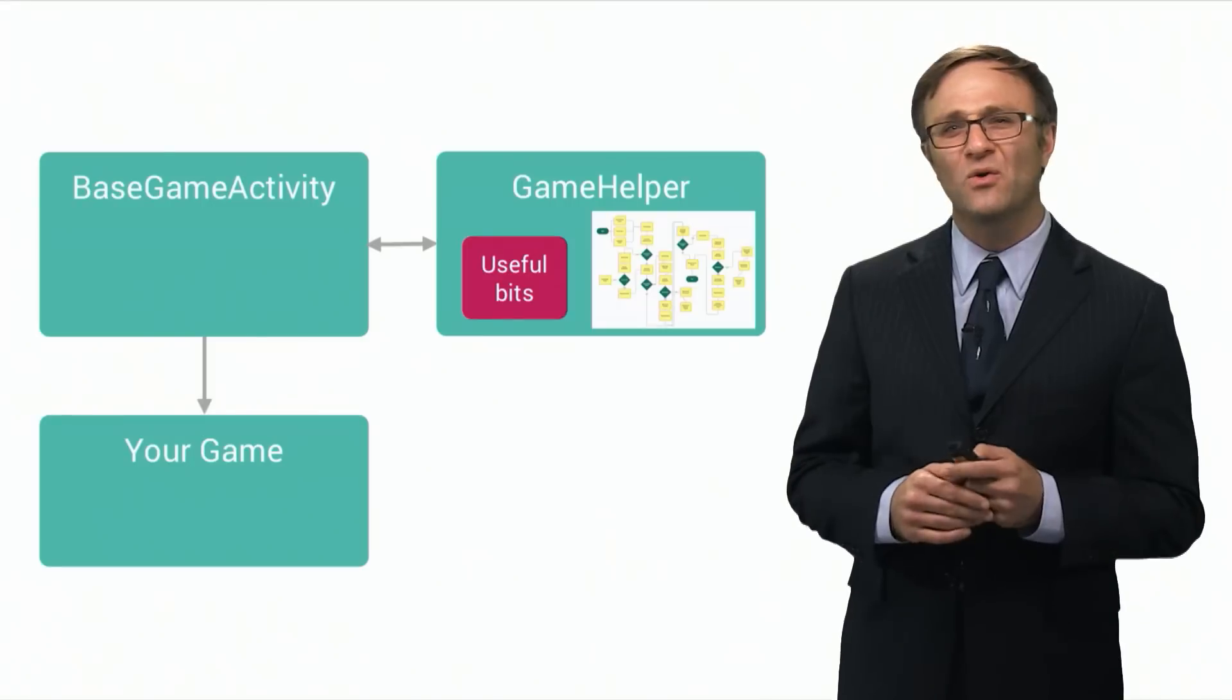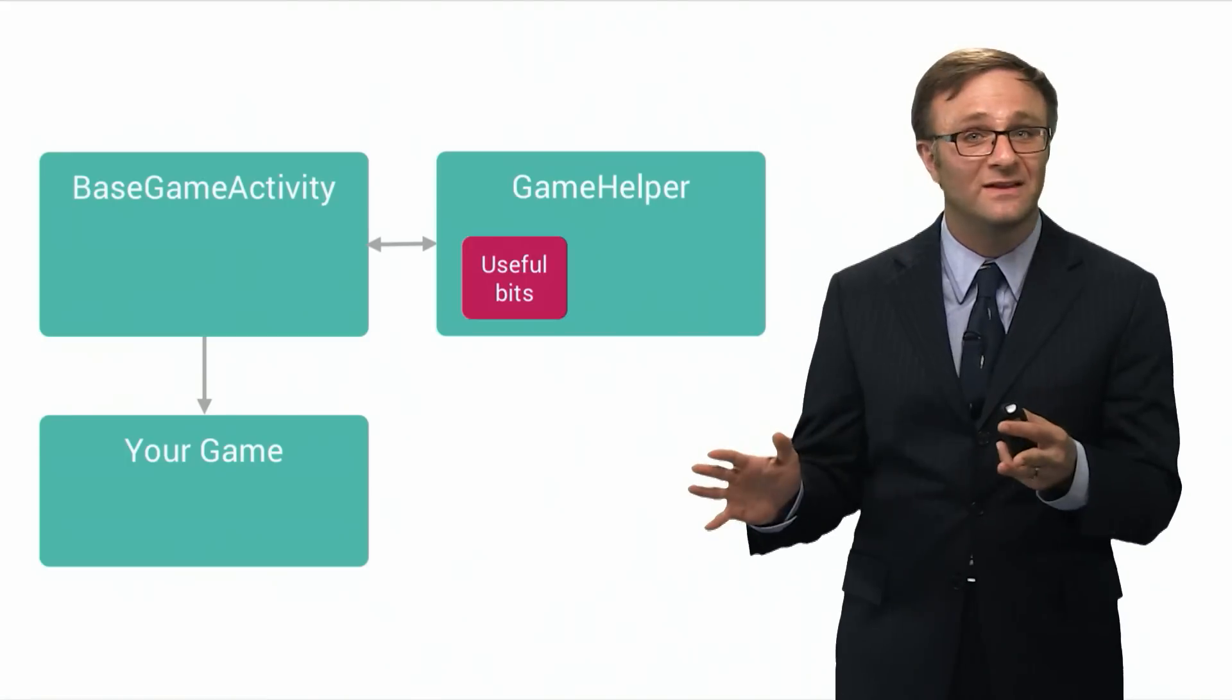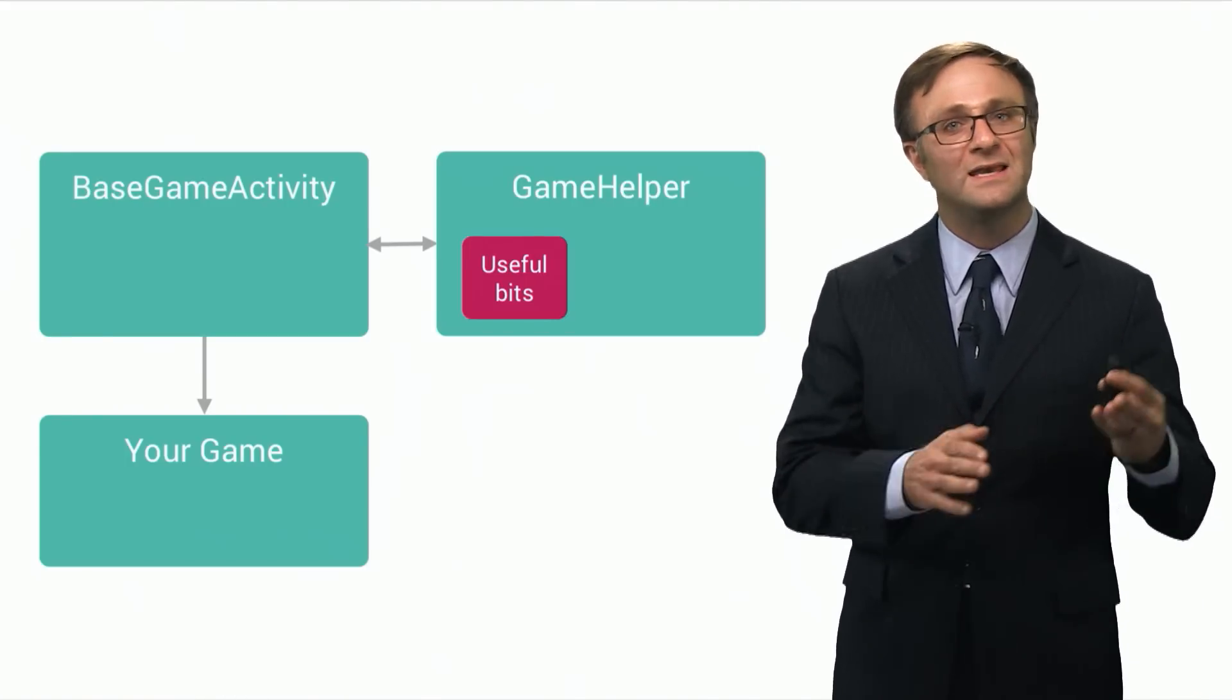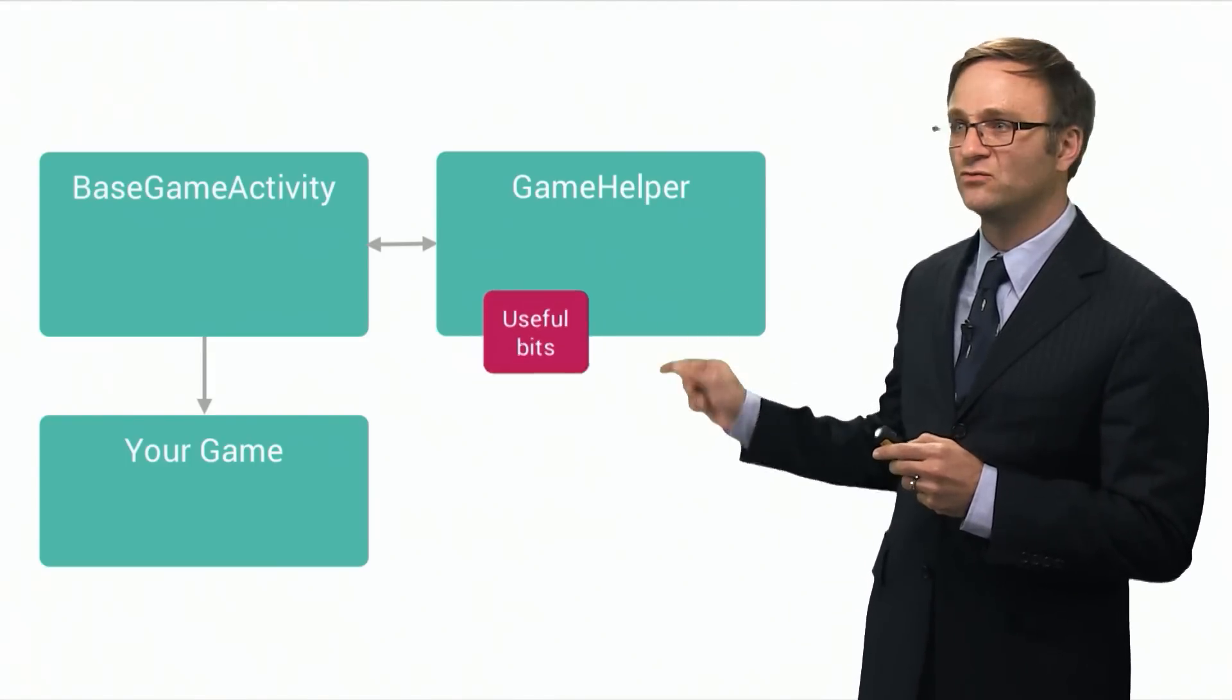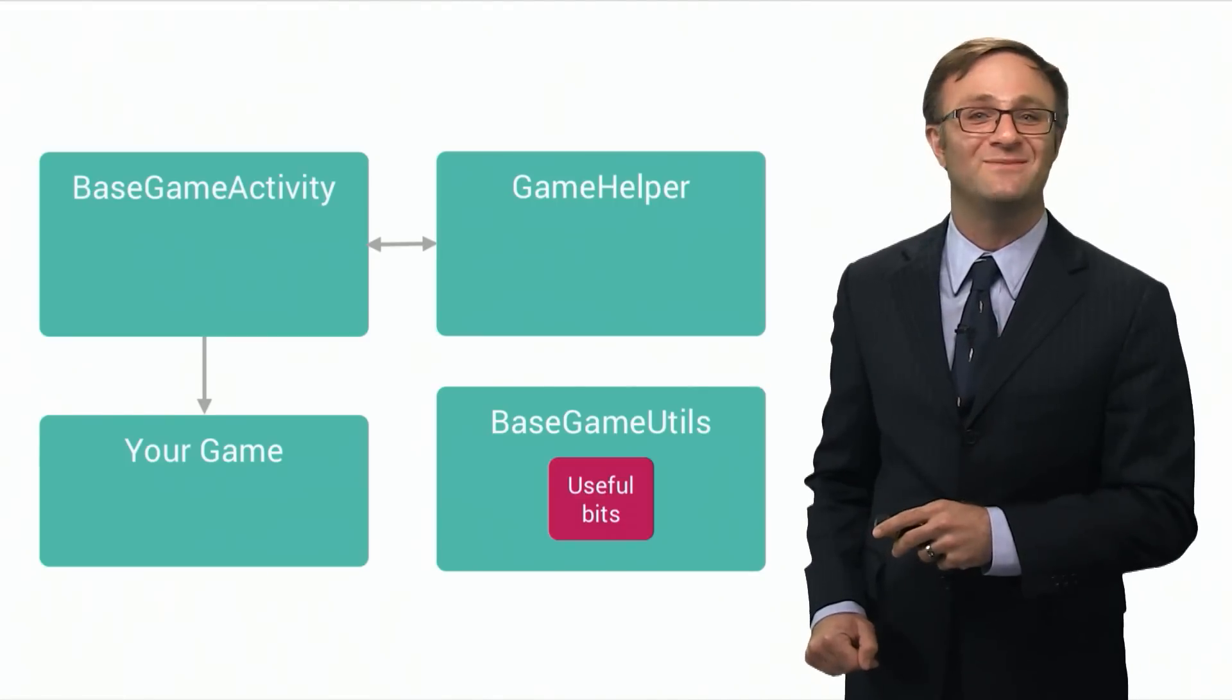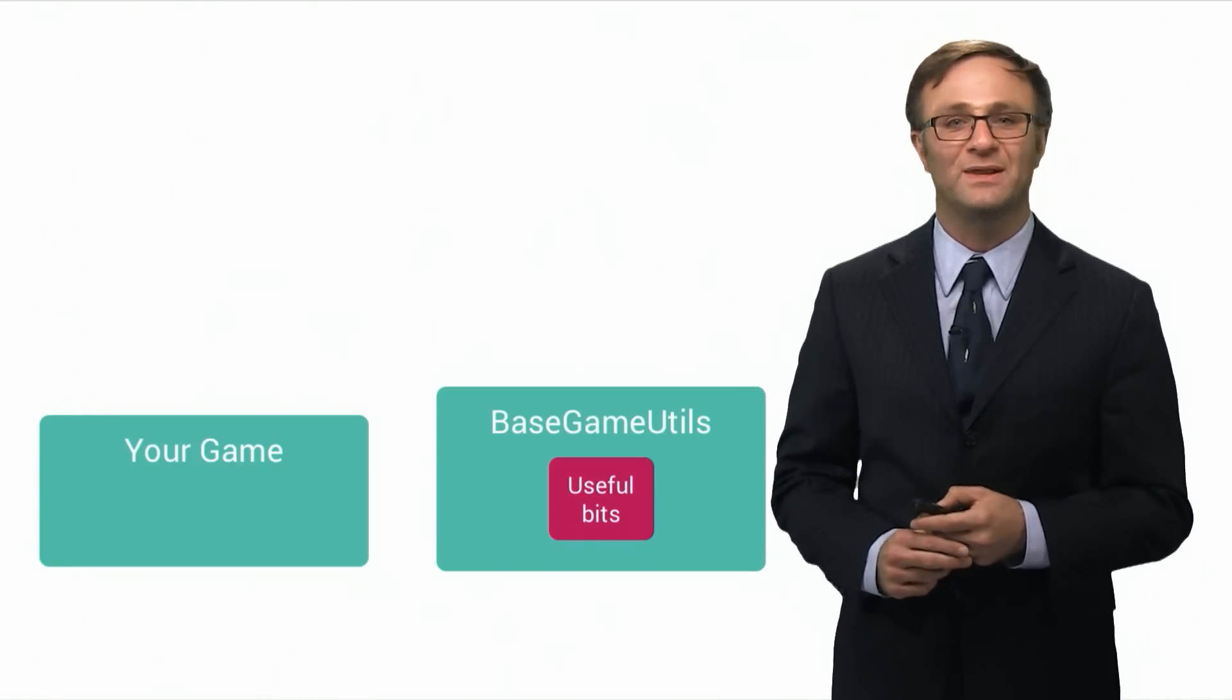But with that, there was a whole lot less stuff that the Game Helper classes suddenly needed to do for you, and its role gradually transitioned from helpful class that did lots of heavy lifting behind the scenes to yet another layer of code you needed to worry about and keep in sync with, like, a few helpful bits still remaining. So what we've done is we've taken those remaining helpful bits and converted them into static methods in a new class called BaseGameUtils. And then we have deprecated both Game Helper and BaseGameActivity and are no longer using them in any of our sample applications.